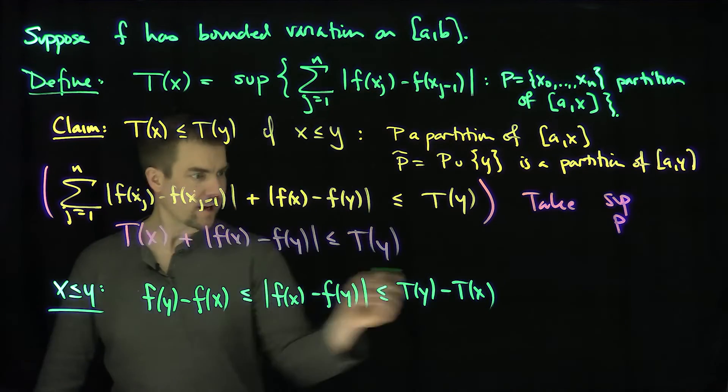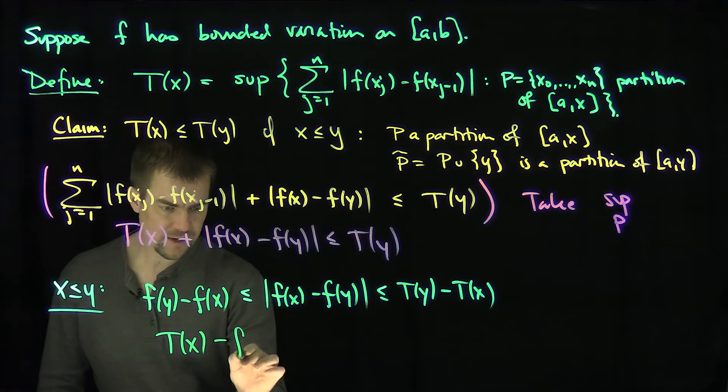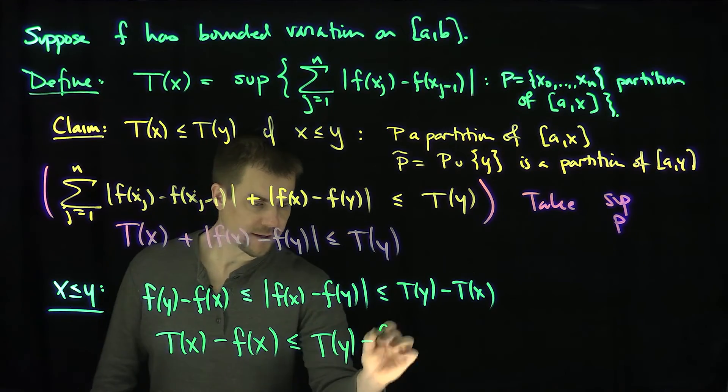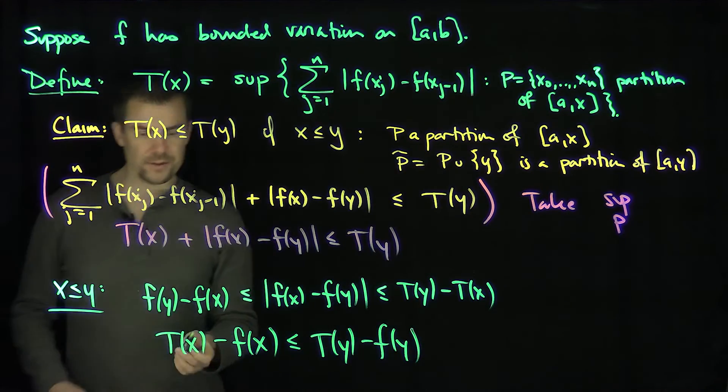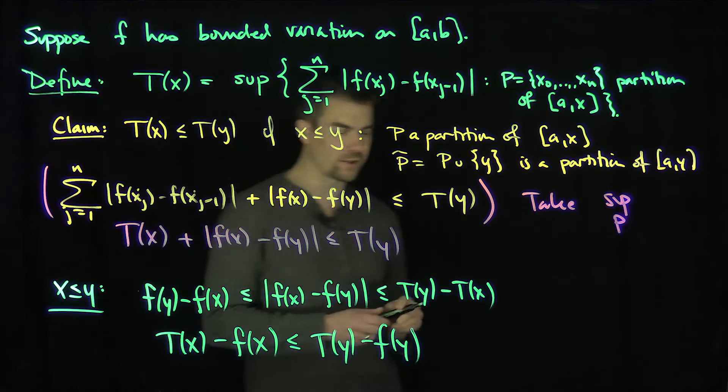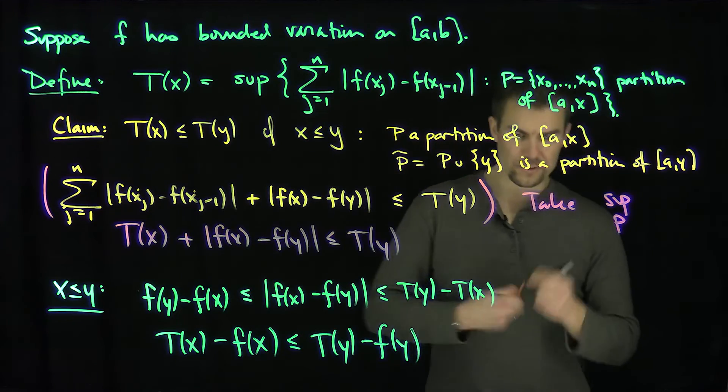I can throw the T of x over here. So T of x minus F of x is less than or equal to T of y minus F of y. So that says that this function T of x minus F of x is increasing.